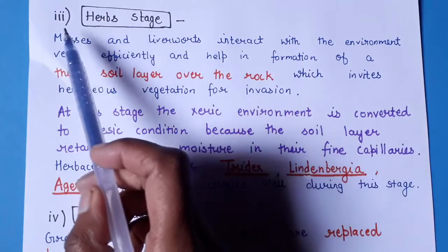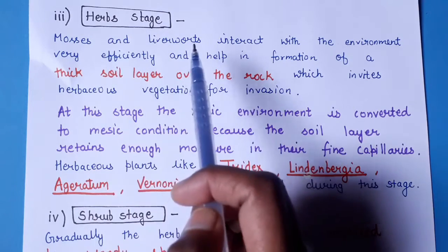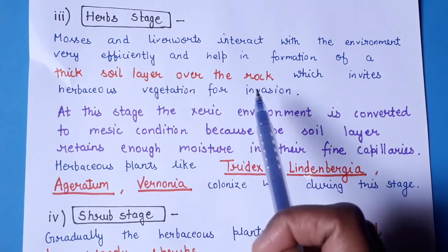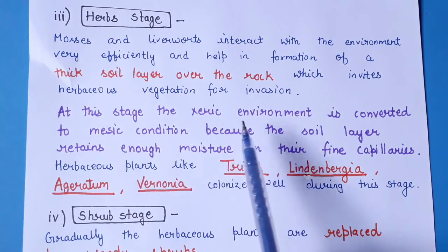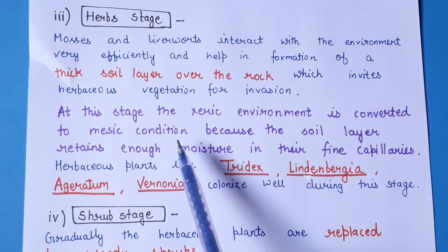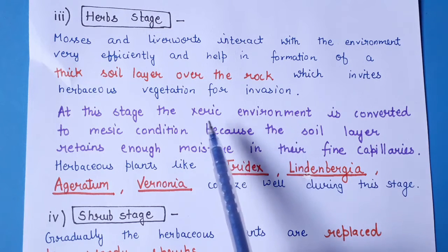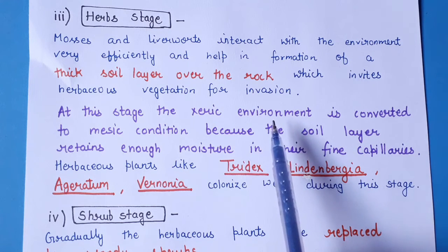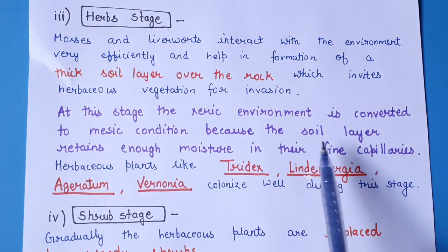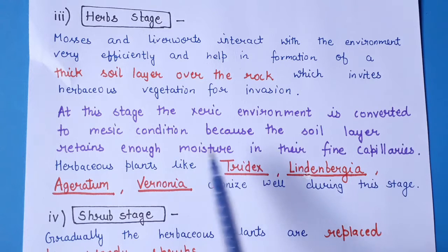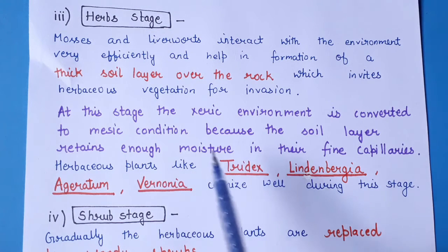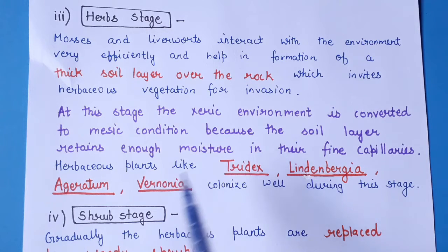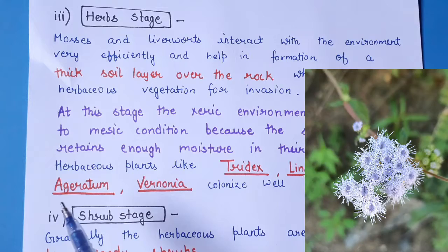The third stage is the herb stage. After the mosses and liverworts, a thick layer of soil has developed over the rock, making the environment suitable for herbs. At this stage the xeric environment is converted into a mesic condition, because the soil layer can retain enough moisture in its capillaries. Herbaceous plants like Tridax, Linderbergia, Ageratum, and Vernonia are present at this stage.